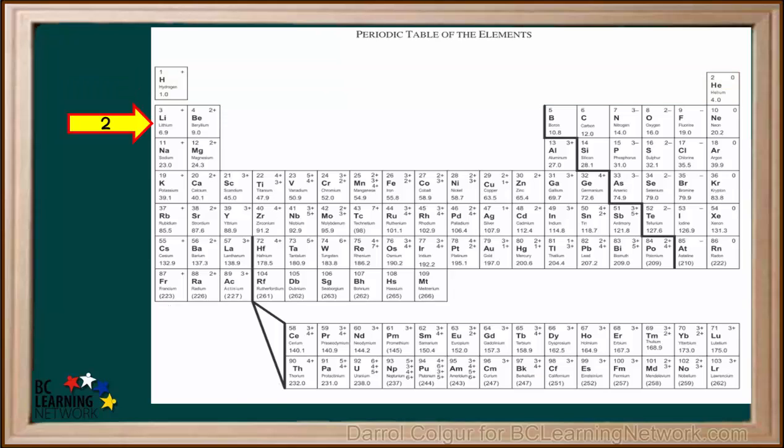The second period, called Period 2, contains elements 3 to 10, lithium to neon. Count the number of elements in Period 2. You can see it contains 8.